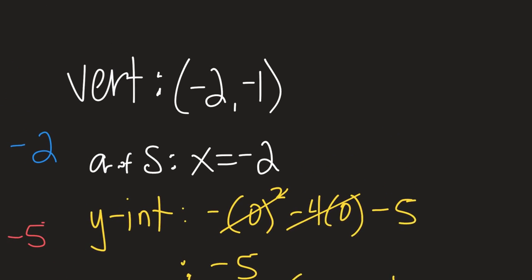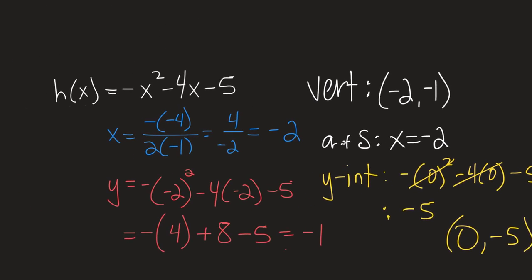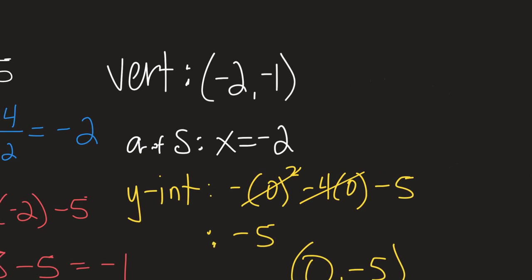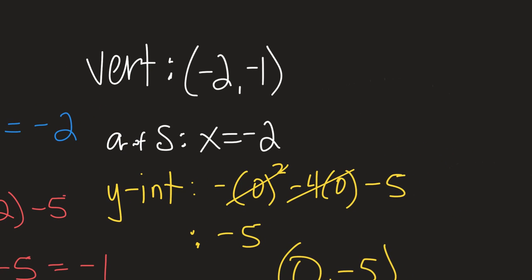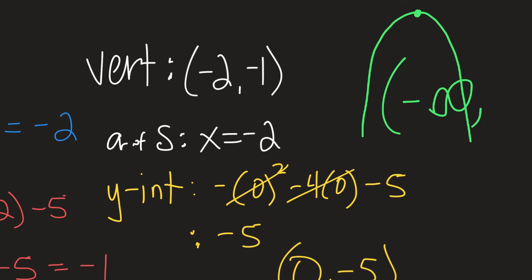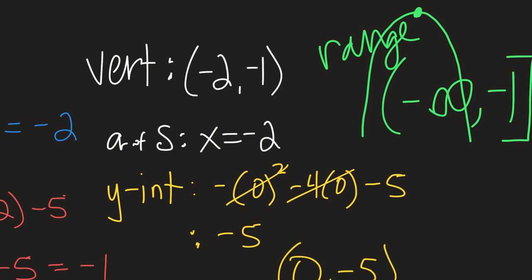Knowing our vertex helps us find the range. This is a negative quadratic, so the parabola opens down, meaning there's a maximum value at the vertex of (negative 2, negative 1). The range goes from negative infinity to negative 1 — the Y value at the vertex — written with a parenthesis on the left and a bracket on the right: negative infinity to negative 1.